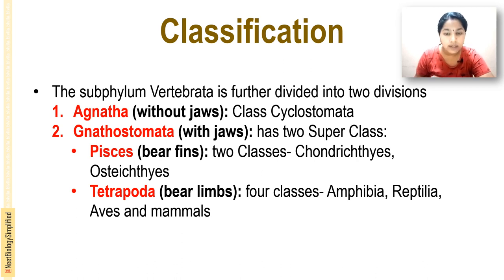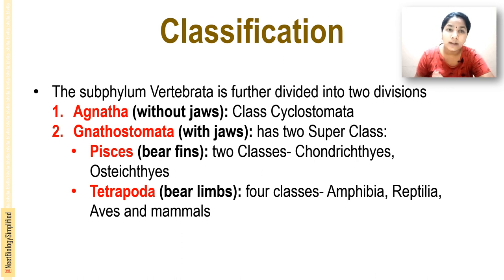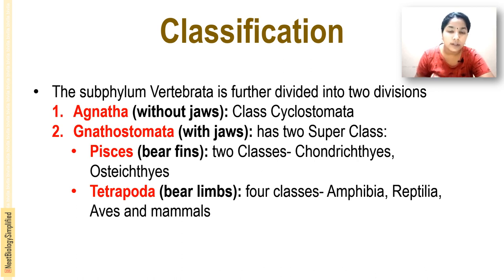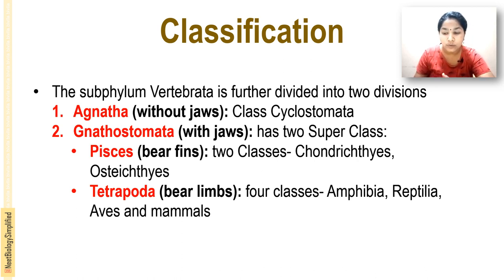So in summary: subphylum Vertebrata is divided into two divisions — Agnatha and Gnathostomata. Agnatha, animals without jaws, includes class Cyclostomata. Gnathostomata, animals with jaws, is divided into two super classes: Pisces and Tetrapoda. Pisces have fins and are divided into Chondrichthyes and Osteichthyes. Tetrapoda have limbs and are divided into Amphibia, Reptilia, Aves, and Mammals. Let us move on to the details of each class.